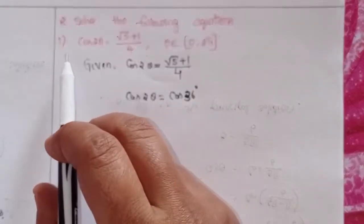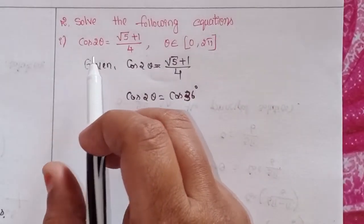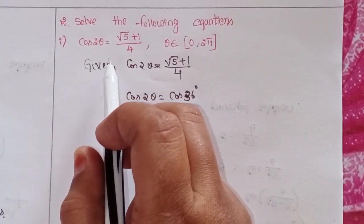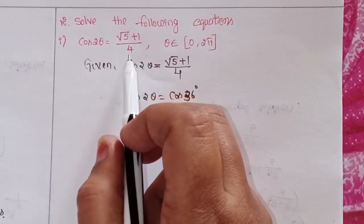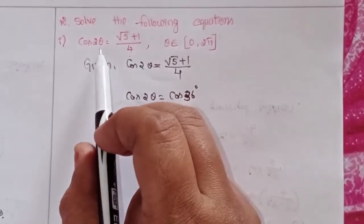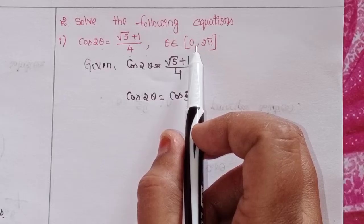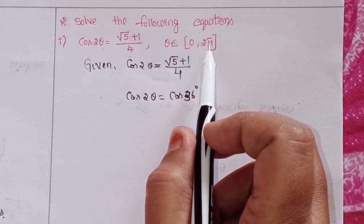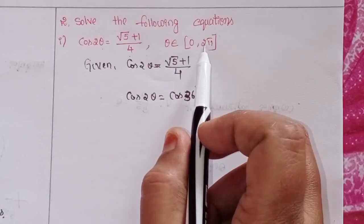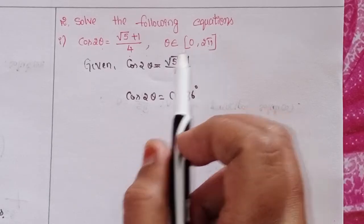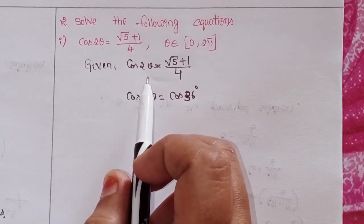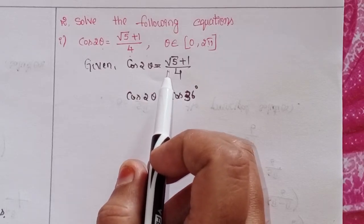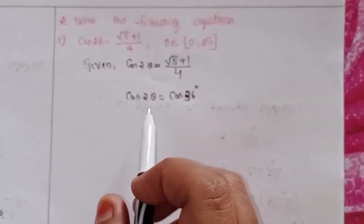Solve the following equations. First one: cos 2θ = (√5 + 1) / 4, where θ belongs to 0 to 2π. First of all, write the given equation: cos 2θ = (√5 + 1) / 4.